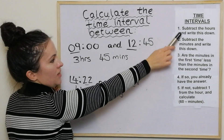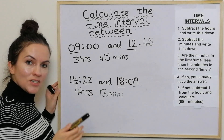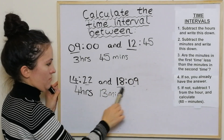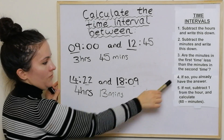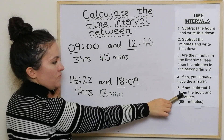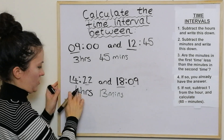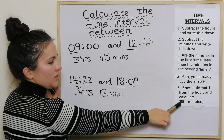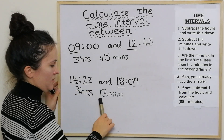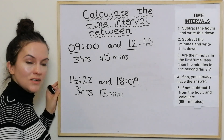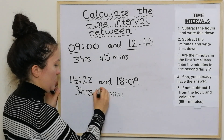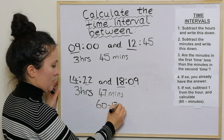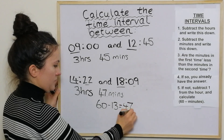So we've subtracted the hours then subtracted the minutes. The next question asks: are the minutes in the first time less than the minutes in the second time? The answer is no, so we need to go further. We subtract 1 from the hour — so instead of 4 hours it becomes 3 hours. Then we calculate 60 take away 13, which is 47. So the answer is 3 hours and 47 minutes.